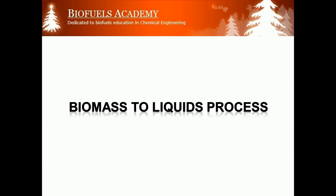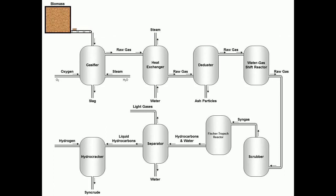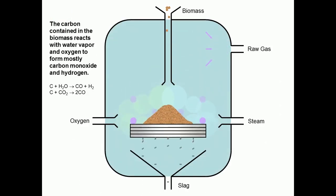In this video, we want to illustrate the operation of biomass to liquid process. The pre-treated biomass together with oxygen and steam are sent into a gasifier for gasification. In the gasifier, the carbon contained in the biomass reacts with steam and oxygen to form mostly carbon monoxide and hydrogen. The mixed raw gas exits at the top of the gasifier.